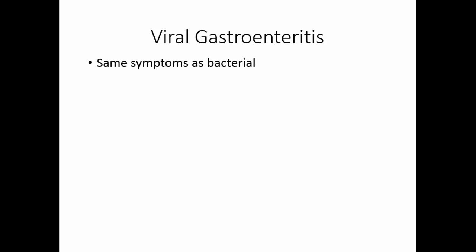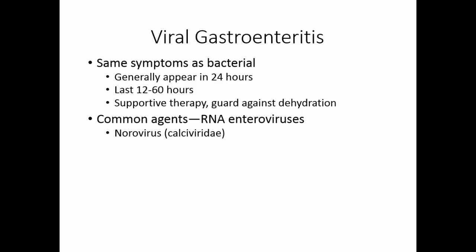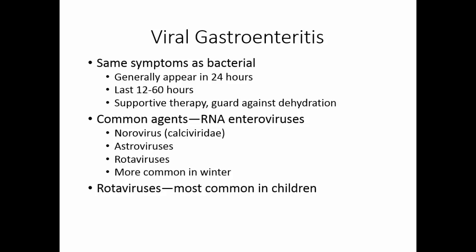Viral gastroenteritis has the same symptoms as bacterial gastroenteritis. Symptoms generally appear within 24 hours of acquiring the virus and last 12 to 60 hours. Supportive therapy is the usual treatment, guarding against dehydration. The common agents are RNA enteroviruses: the norovirus (a caliciviridae), which has been implicated on cruise ships; astroviruses; and rotaviruses. These viruses are more common in winter when people are crowded together. Rotavirus is the most common cause of diarrhea in children, and since children are very susceptible to dehydration, rotaviruses have caused death in children. A vaccine is available and most doctors administer it to children.